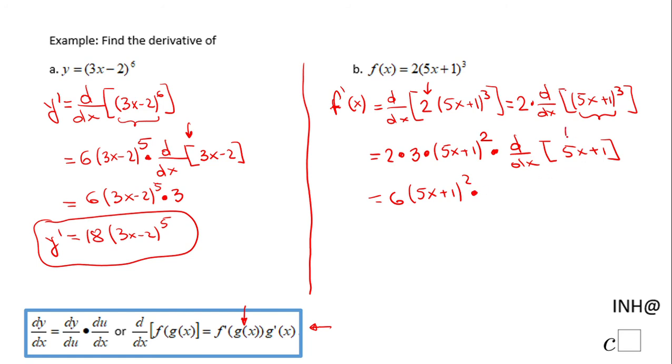Last step: one more simplification. We have 6 times 5, which is 30, so 30 times the quantity (5x + 1) squared. This is what we call f'(x), or the derivative of f with respect to x.